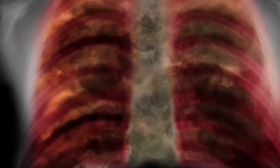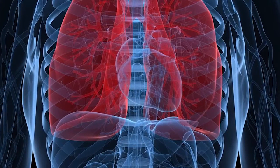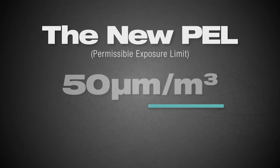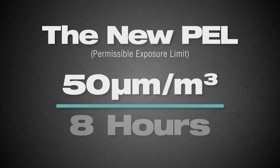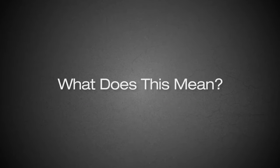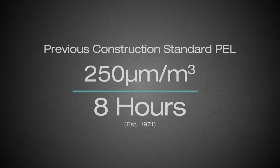Due to health issues related to silica dust, OSHA has reduced the Permissible Exposure Level, or PEL, for silica dust to 50 micrograms per square meter on an 8-hour time-weighted average. The 8-hour time-weighted average part is too complicated to get into here, but simply put, the new standard is basically one-fifth of what was previously allowed for construction.